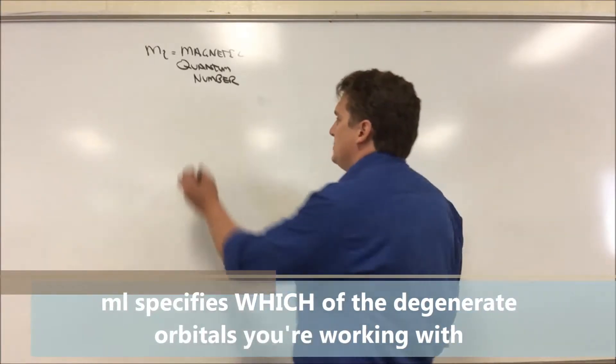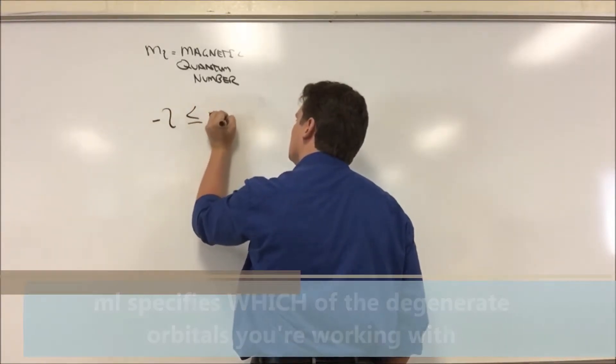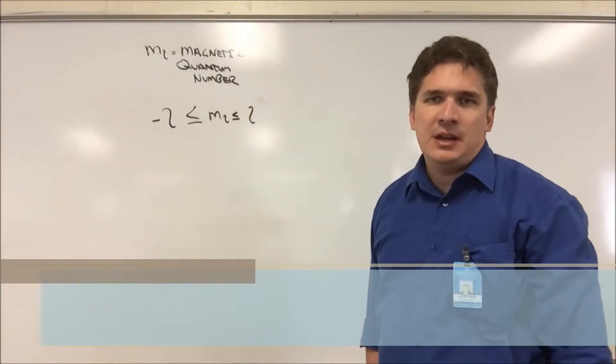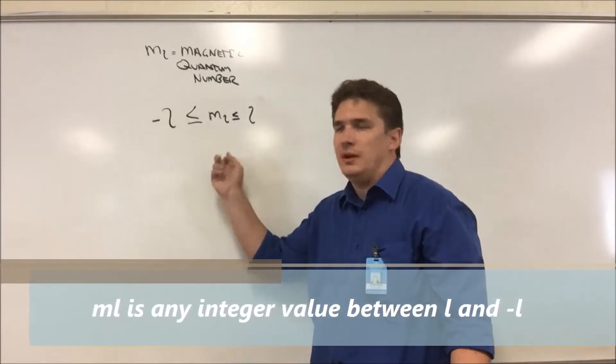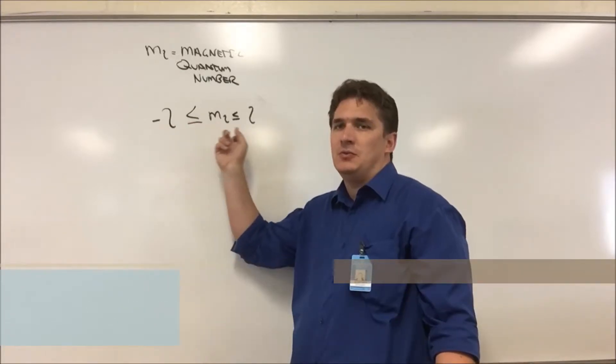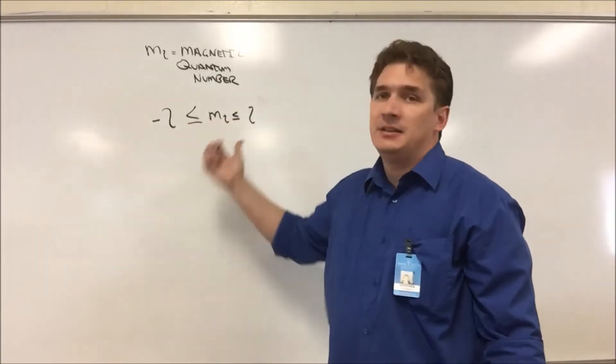The magnetic quantum number can take on values between minus l and l. So if l is 0, m_l has to be 0. If l is 1, m_l can be negative 1, 0, and 1. If l is 2, we can have minus 2, minus 1, 0, 1, and 2. The only rule is we have to take on an integer value bounded by the values of l.